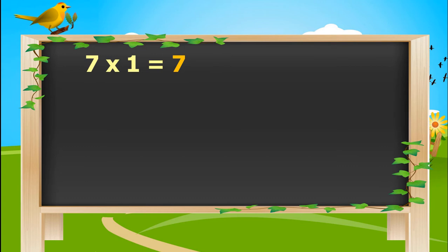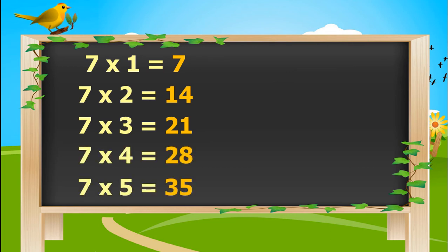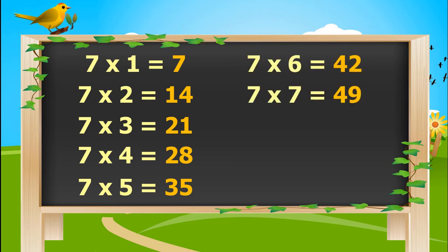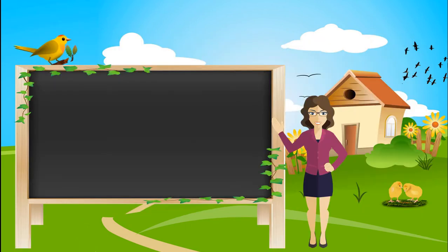7 ones is 7. 7 twos are 14. 7 threes are 21. 7 fours are 28. 7 fives are 35. 7 sixes are 42. 7 sevens are 49. 7 eights are 56. 7 nines are 63. 7 tens are 70. Let's learn table of 8.